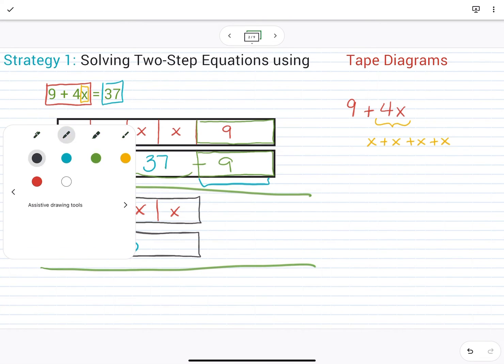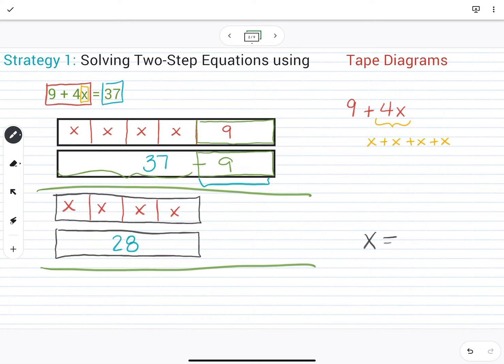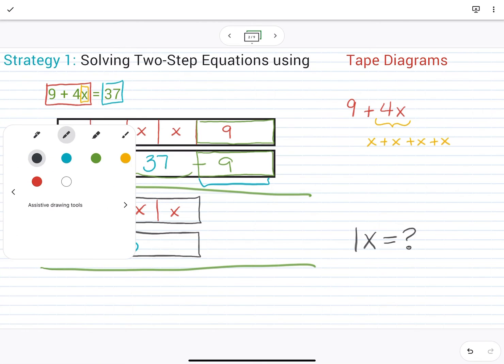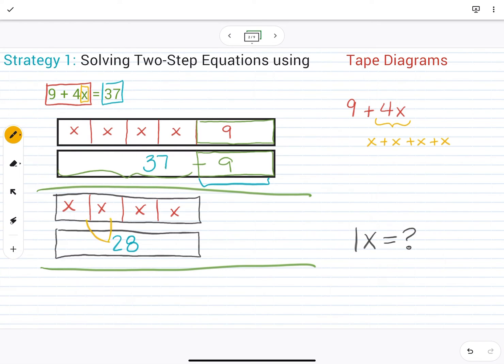But we're not done, right? Because the goal here is we're trying to isolate the variable. We're trying to figure out what does x equal. 1x, just one of them. I have 4 here. So if I know that that bottom tape is equal to 28 and that top one is broken into 4 pieces, how am I going to figure out what each of those equal? If you're thinking division, you're absolutely correct. We want to break 28 up into 4 equal pieces. So I'm trying to solve for 1x. And when I break 28 up into 4 equal pieces, I get 7. So I know that 1x or just x equals 7.